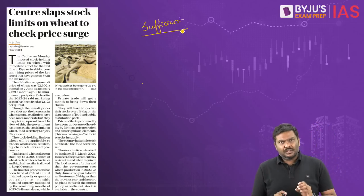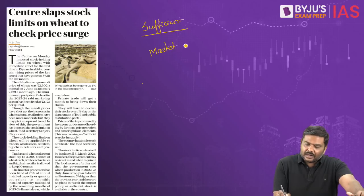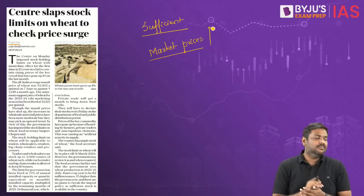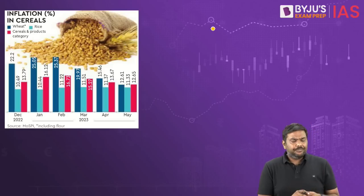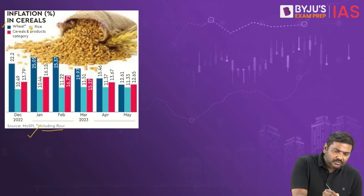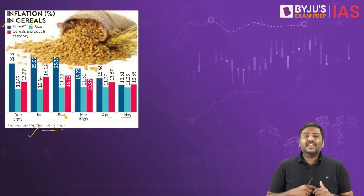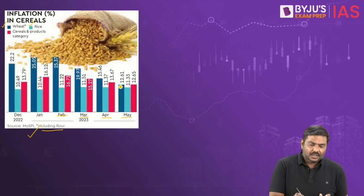The Government of India needs to ensure that there is sufficient supply of wheat in the domestic market. If there is no sufficient supply of wheat, market prices will start increasing, and when market prices of agriculture commodities start increasing, it will not only cause food inflation but also a rise in the overall inflationary rate. If you look at the inflation trend, wheat inflation has been in double digits for the last couple of months.